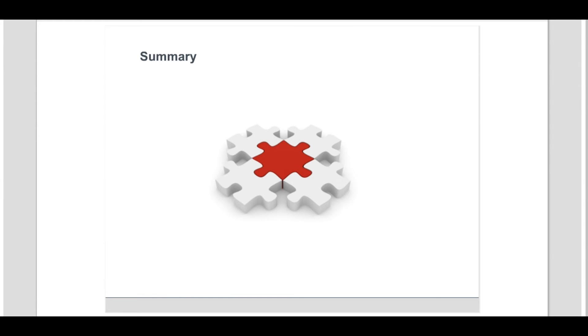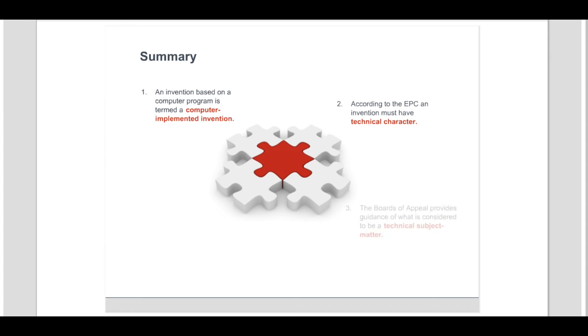To summarize what we have learnt: an invention embodied in a computer program is termed a computer-implemented invention. It is an implicit requirement of the EPC that an invention must have technical character. The decisions of the Boards of Appeal have provided guidance as to what is considered to be technical subject matter in the field of information technology. Computer programs are excluded from patentability under Article 52.2 and 52.3 if they are not capable of causing a further technical effect.